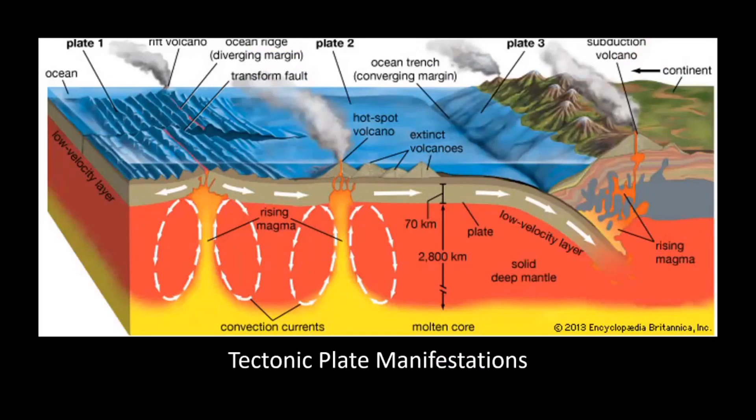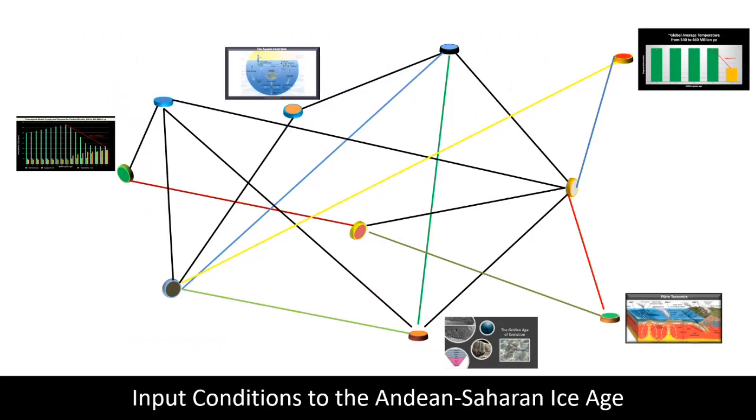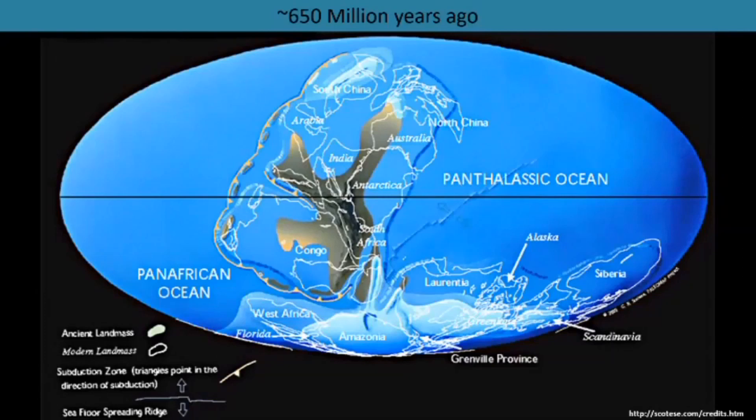The movement of the tectonic plates had produced numerous changes that included volcanic eruptions and the spreading of the sea floor. But the most fundamental effect produced by the tectonic plate movements began 650 million years ago.